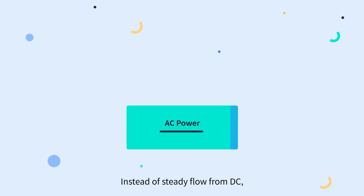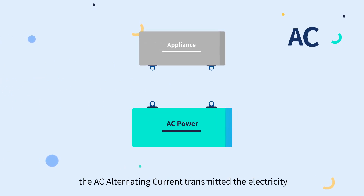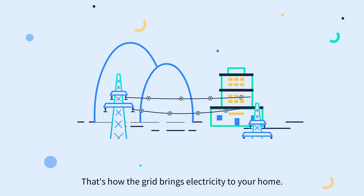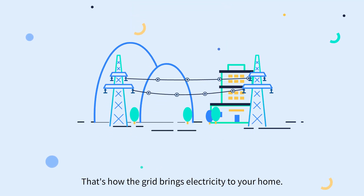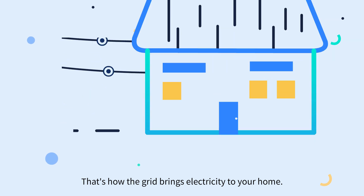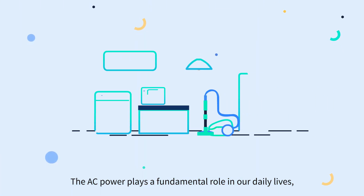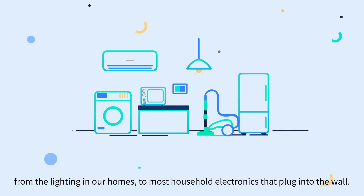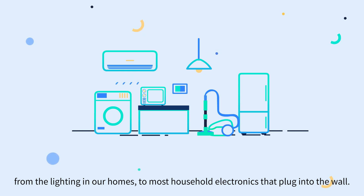Instead of the steady flow of DC, AC alternating current transmits electricity by rapidly reversing the direction of flow at a very high frequency. That's how the grid brings electricity to your home. AC power plays a fundamental role in our daily lives, from the lighting in our homes to most household electronics that plug into the wall.